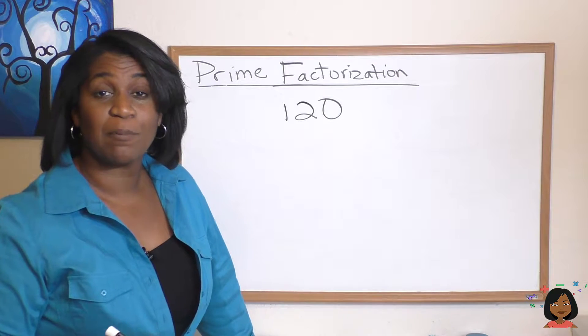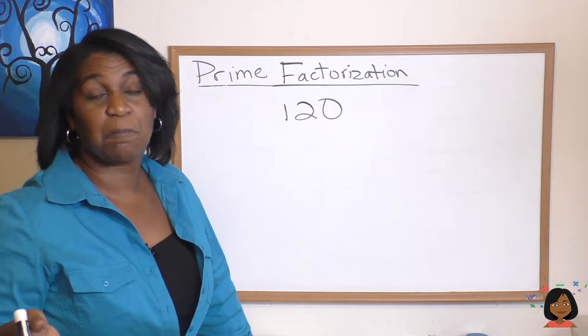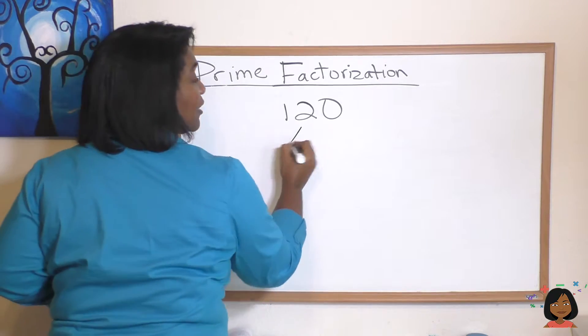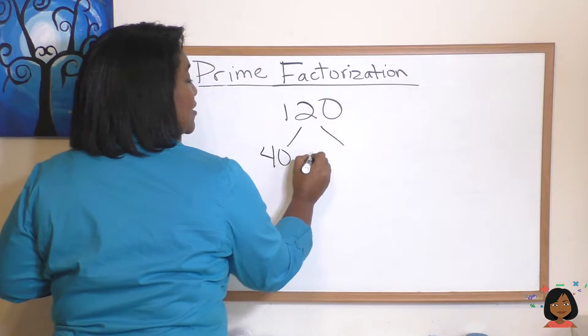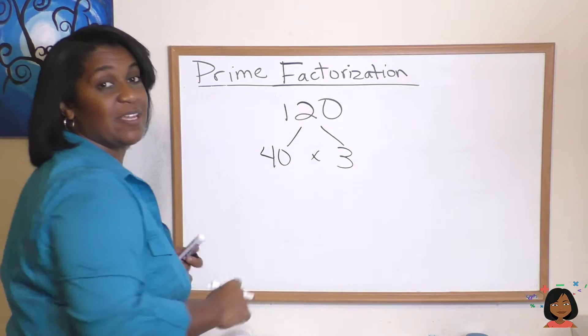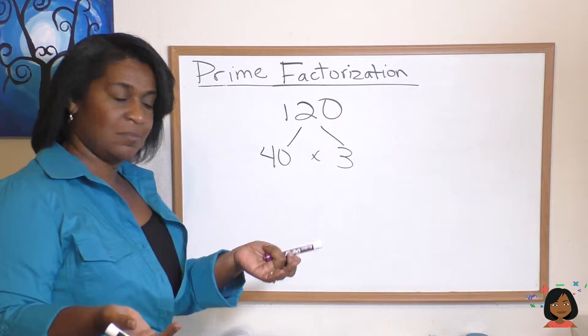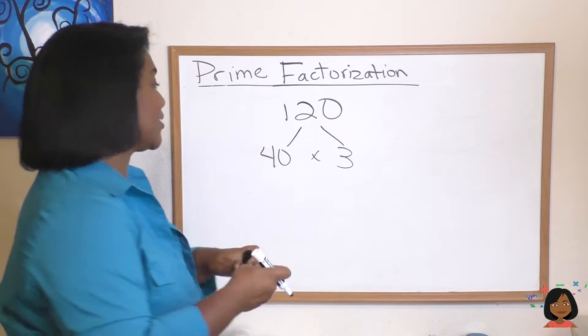Let's try it with another number. My number is 120. And I'm going to pick 40 times 3. It doesn't really matter where you start in your factor tree. I'm just going to do 40 times 3 because 40 times 3 gives me 120. Now I look and I say are these numbers prime? Well we know 40 is not because it's an even number. But 3 is. So I can circle my 3.